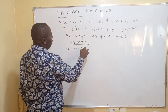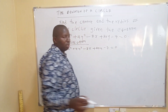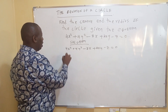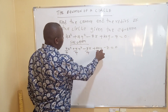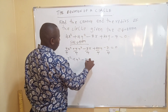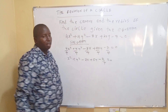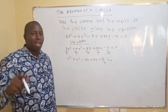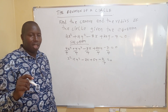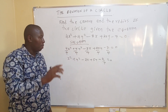So this equation is 4x squared plus 4y squared minus 8x plus 20y minus 7 equals 0. You make the coefficients 1, so divide every term by 4. You get x squared plus y squared minus 2x plus 5y minus 7 over 4 equals 0. That is step number 1.